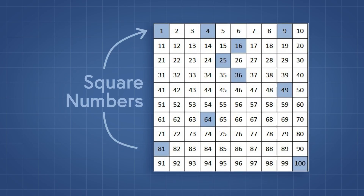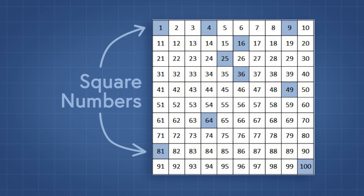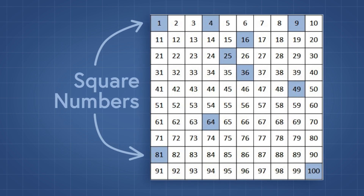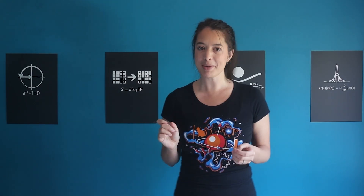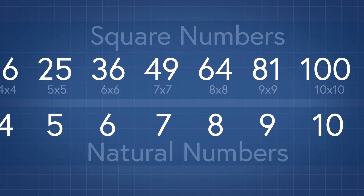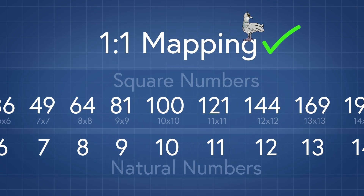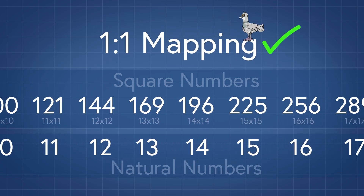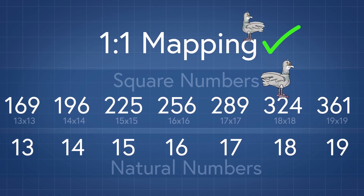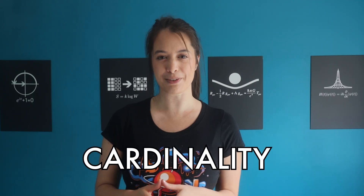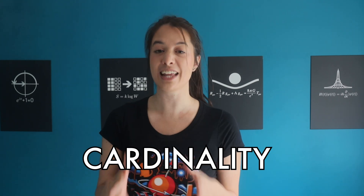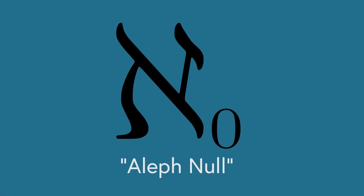What about the infinity of the natural numbers compared with that of the square numbers? Square numbers make up only a small part of all natural numbers, so you might think the infinity of natural numbers is larger. But for every natural number, there's a corresponding square number, so the two infinities are actually the same size. This is a weird property of infinite sets: a subset can be the same size as the set itself. When two sets have the same size, we say they have the same cardinality. The cardinality of the natural numbers, the negative whole numbers, and the square numbers is called aleph null.